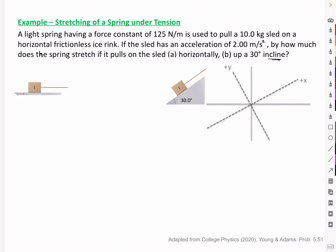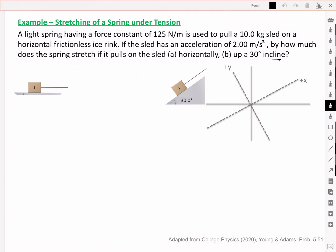Here's a simple example involving elastic forces. A light spring having a force constant of 125 newtons per meter is used to pull a 10 kilogram sled on a horizontal frictionless ice rink. If the sled has an acceleration of 2 meters per second squared, by how much does the spring stretch if it pulls on the sled: A, horizontally, and B, up a 30 degree incline?